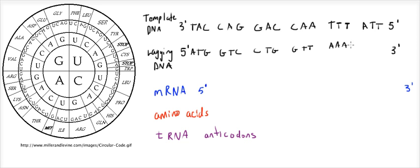Remember that the lagging strand is not involved in transcription. Instead you look at only the template strand of DNA — that top one. So now if we want to transcribe this template DNA, remember that the template DNA must be read from the 3' to 5' direction, because the mRNA must be synthesized from the 5' to the 3'. So to remain anti-parallel, if the mRNA is going to go 5' to 3', the template DNA has to be read 3' to 5'.